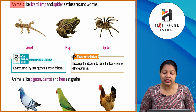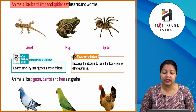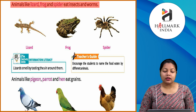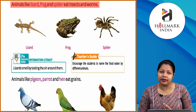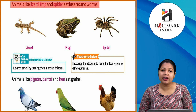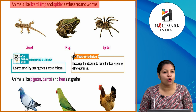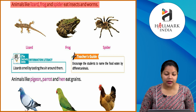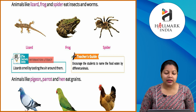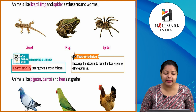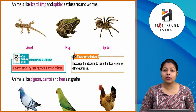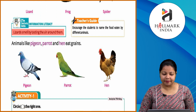Animals like lizard, frog and spider eat insects and worms. Lizard, frog and spider — these animals eat insects and worms. Information literacy: lizards smell by tasting the air around them. Lizard air ko taste karke smell kerti hain.